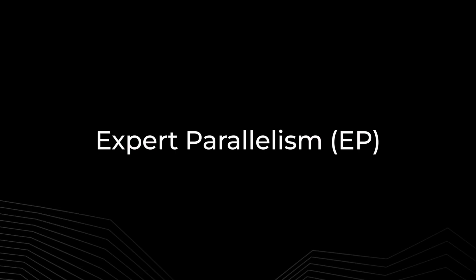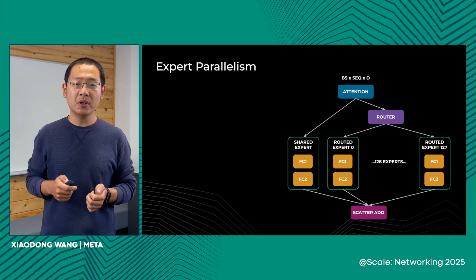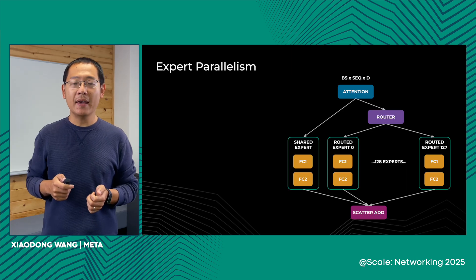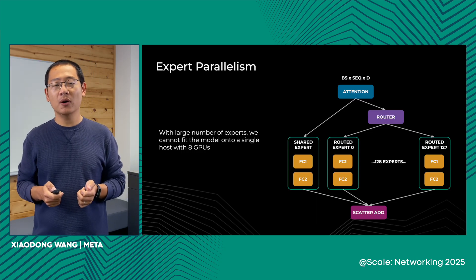Now let's look at expert parallelism. First, let's examine the architecture of the LLAMA 4 Maverick model — a transformer block where at the beginning we have an attention module. The output of the attention module goes to both a shared expert and 128 routed experts. The attention output goes through a router, which picks one of the 128 experts to go through the fully connected layers. The outputs of the shared expert and routed experts go to a scatter-add module to sum them up, then feed into the next transformer block. Because of the large number of experts, we cannot fit the model onto a single host with 8 GPUs, and therefore we need expert parallelism.